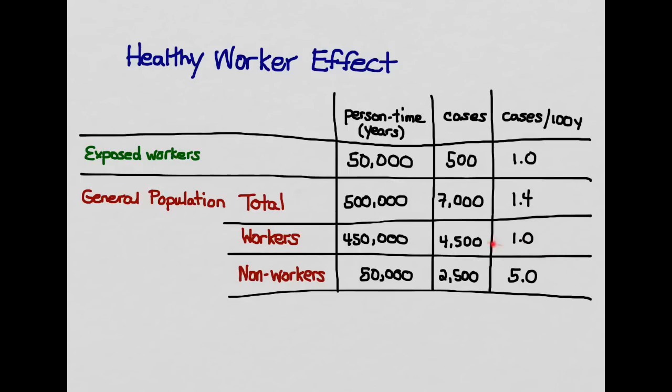So just looking at workers would be the appropriate population to compare to the exposed workers because non-workers are less healthy than workers. Because being ill is one reason why these people are not working. So this is a type of selection bias that can occur in a cohort study.